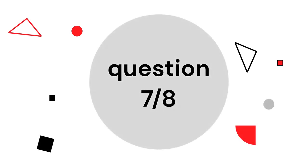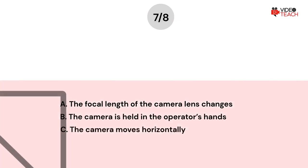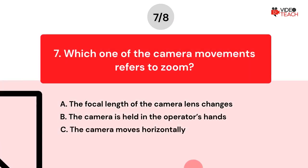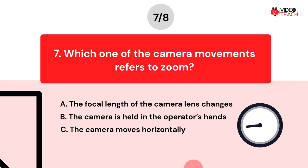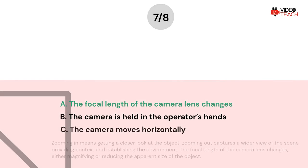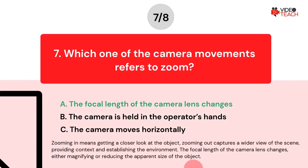Question number seven. Which one of the camera movements refers to zoom? Option A: The focal length of the camera lens changes. Option B: The camera is held in the operator's hands. Option C: The camera moves horizontally. The correct answer is Option A. Zooming in means getting a closer look at the object. Zooming out captures a wider view of the scene, providing context and establishing the environment. The focal length of the camera lens changes, either magnifying or reducing the apparent size of the object.